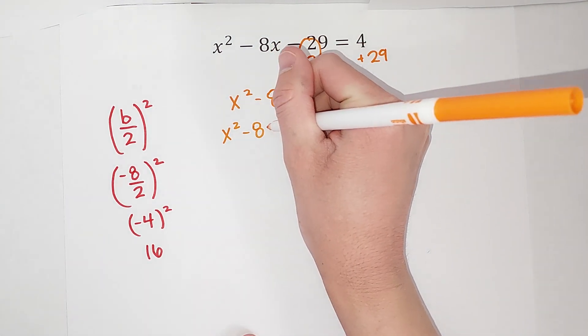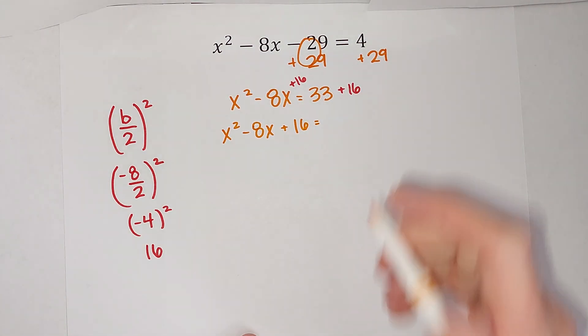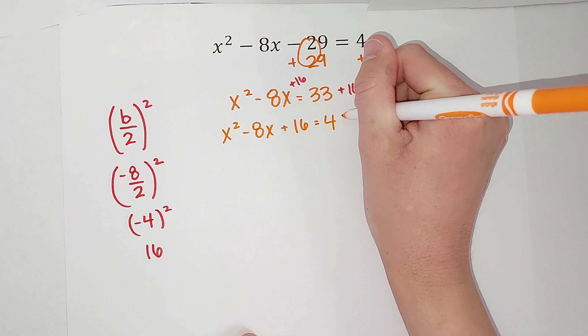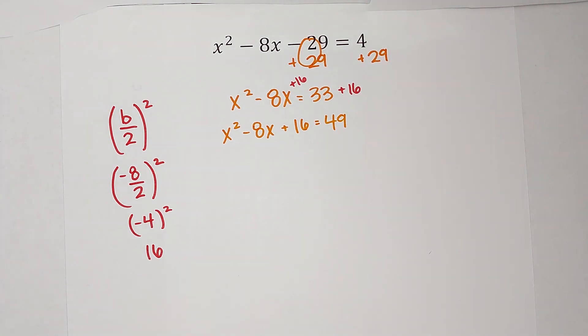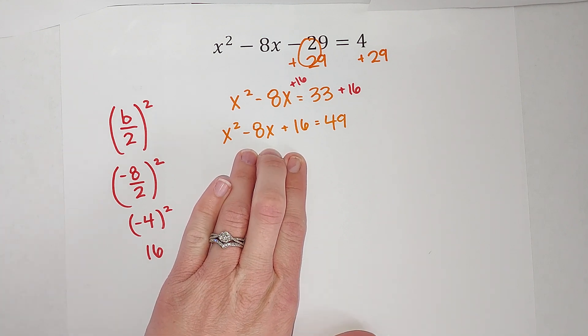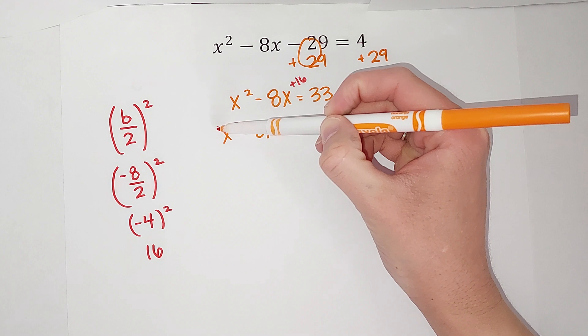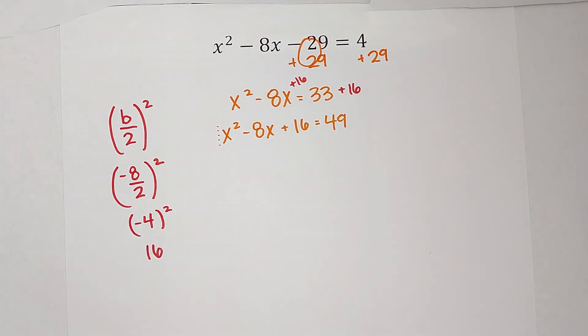Minus 8x plus 16 equals 33 plus 16, which gives me 49. Now I am going to factor this side. If I were to go about the way you've probably been factoring, I would take 16, multiply it by the invisible one here, so I would be looking for two numbers that multiply to 16 and add to negative 8.